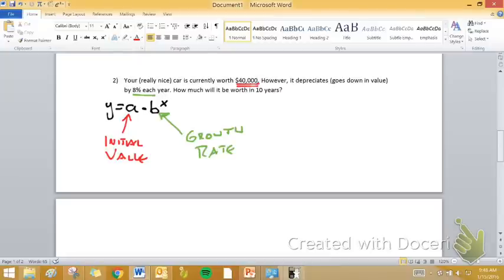Now for this, we're going to have y equals, that initial value is the easy thing to find. That's $40,000, and that's going to be multiplied by some growth rate to the x power. Now here's where we've got to, once again, use some logic to figure out that growth rate.